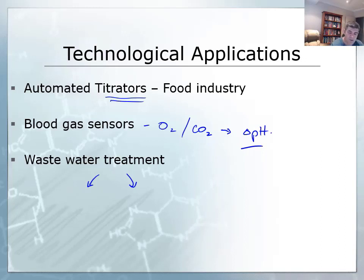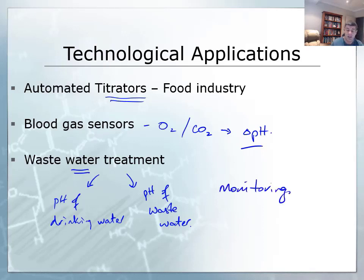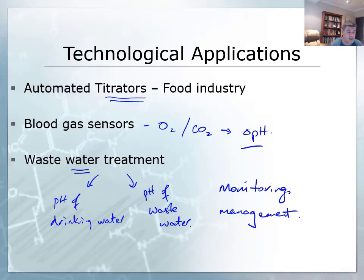In terms of water treatment in general, acids and bases play a particularly important role. The pH of drinking water is very important, but so is the pH of wastewater. This requires two key processes: monitoring the levels to determine what the pH is compared to what it should be, and managing which chemicals can be added to restore the pH balance without creating more problems than they solve.